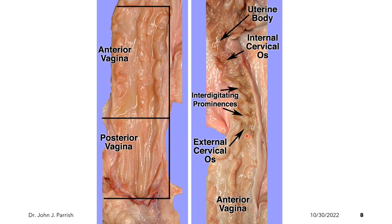In some species, the cervix extends into the anterior vagina to form a pocket which is known as the fornix. The pig, however, does not have a fornix.